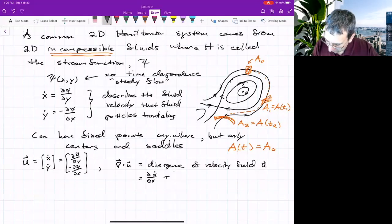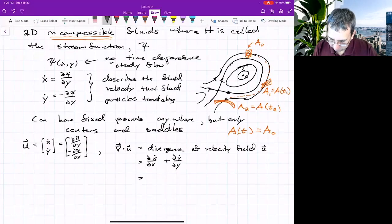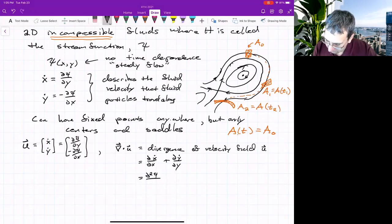That's the divergence for 2D fluid flow. And now we just plug in what we have for x dot and y dot. So we've got second derivative of psi with respect to x and y minus second derivative of psi with respect to x and y. What do you know? It's zero.